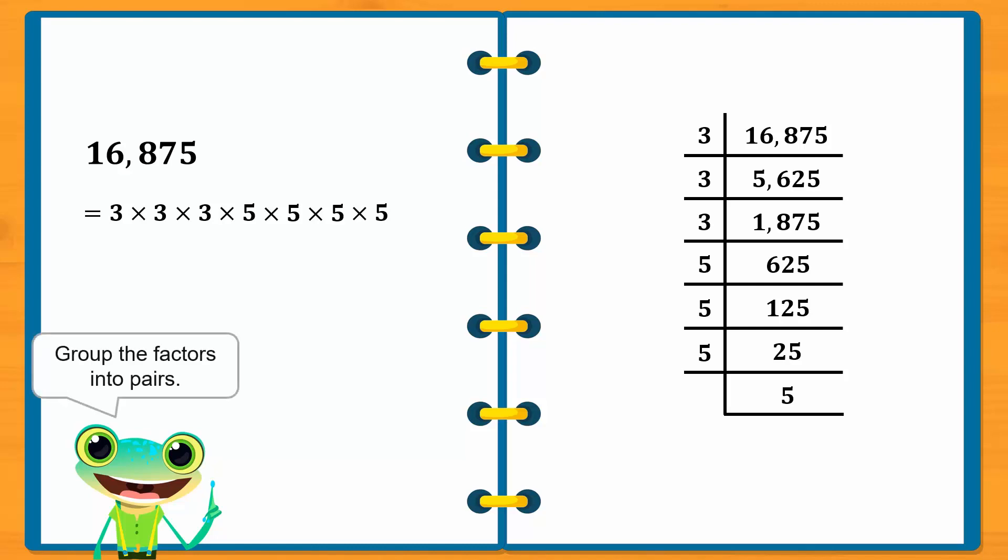Next, group similar factors into pairs. Since there are 3 copies of 3, we only have 1 pair of 3. Four copies of 5 can be grouped into 2 pairs. Here, we see that this 3 is not part of a pair. When this happens, we conclude that the number is not a perfect square.